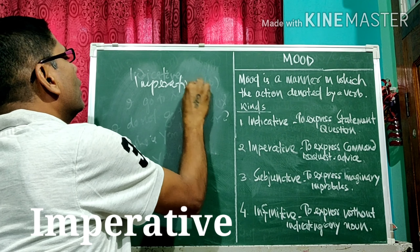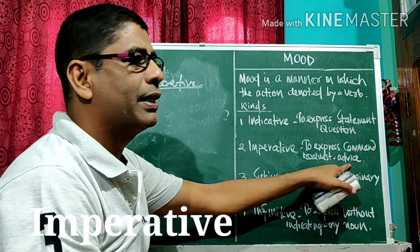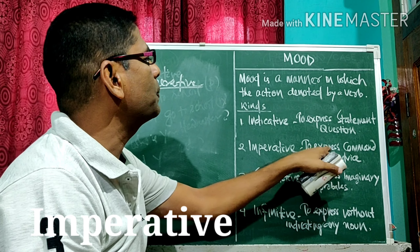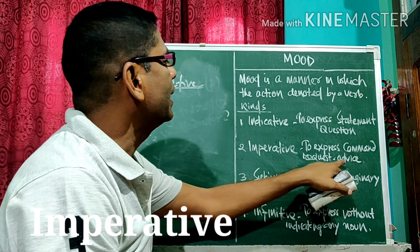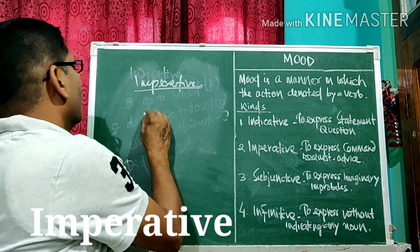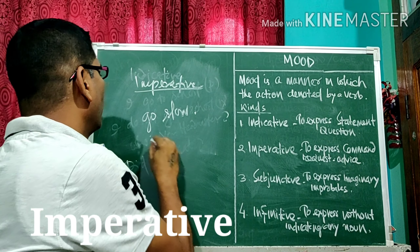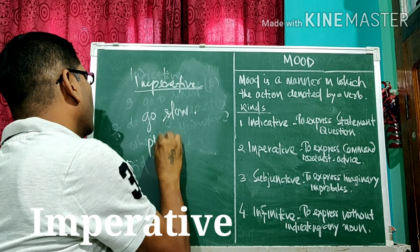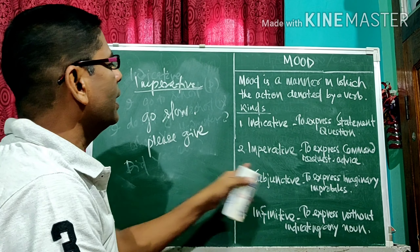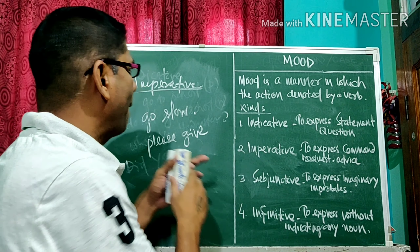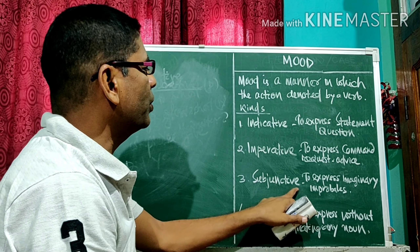Now we will discuss the imperative mood. Imperative is used to express a command, request, or advice. In an imperative sentence, you cannot get the subject. For example: 'Go slow,' 'Please give.' These are examples of the imperative mood.